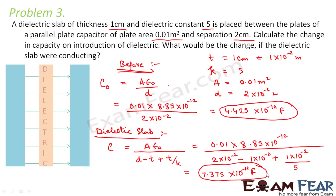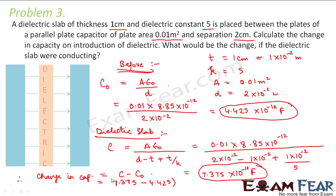This is the capacitance of the capacitor when the dielectric slab is introduced. Therefore the change in capacitance equals C − C₀, which is 7.375×10⁻¹² minus 4.425×10⁻¹², giving 2.95×10⁻¹² farads. This is the change in capacitance on introduction of the dielectric.